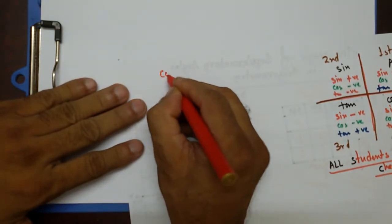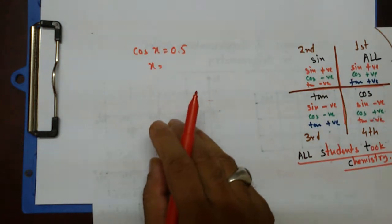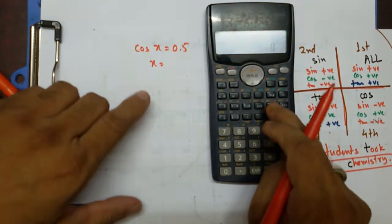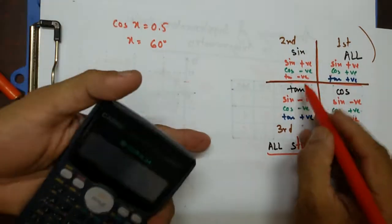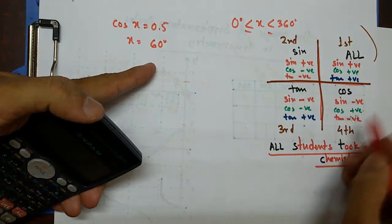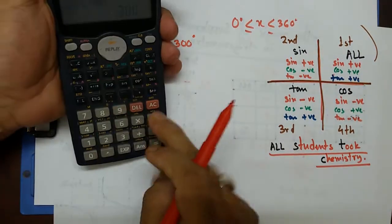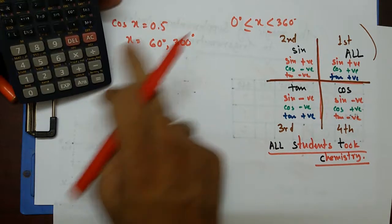Let's say cos x equals 0.5. I'll go straight ahead to solving this equation. Using cos inverse on the calculator: cos⁻¹(0.5) gives me 60°. So x equals 60°, which is in the first quadrant. And I know there is another positive value between 0° and 360°, and that's in the fourth quadrant where cos is positive. So I write 360 minus 60, which gives 300°. Cos 60° equals 0.5 and cos 300° also equals 0.5 — the calculator confirms this.